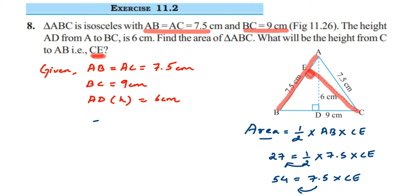So we get CE = 54 divided by 7.5. To remove the decimal point we multiply numerator and denominator by 10, getting 540 divided by 75. We can cancel in the 5 table: 5 into 10 is 2 in the numerator, and 5 into 75 gives 15.